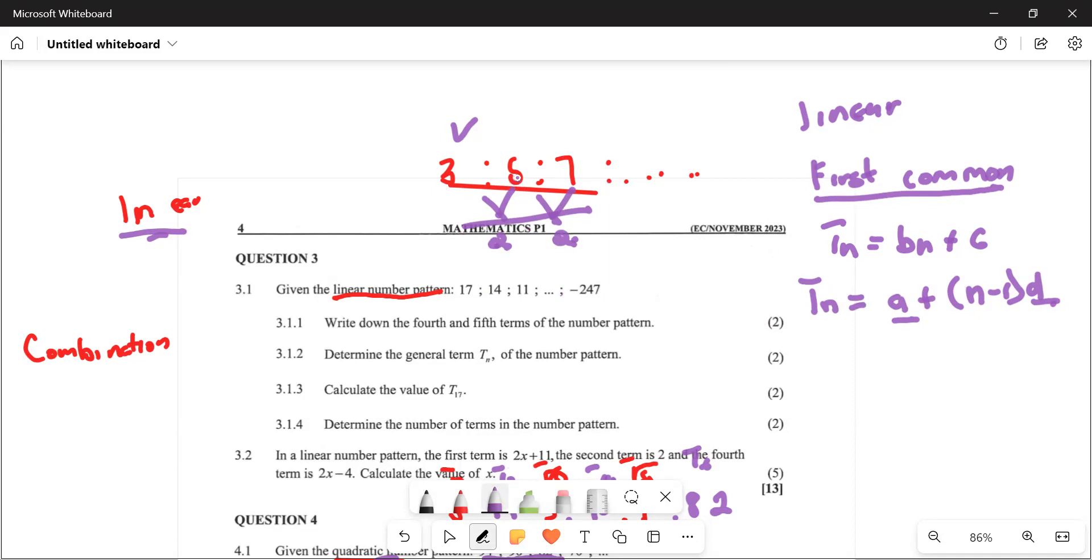Here, what is the common difference? It's two. We said five minus three - five minus three gives us two. So D is two. And then first term, whatever the first term is, we're going to put it here. So here you have three, and then you have n, and then after that you will have two. So it equals three plus (n-1) multiplied by two.